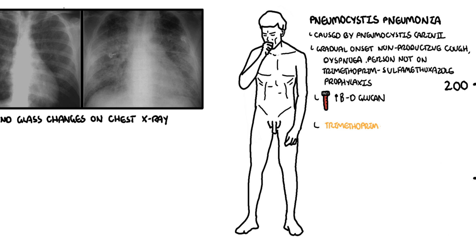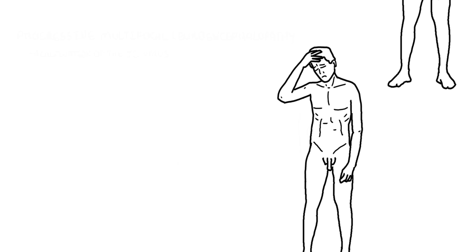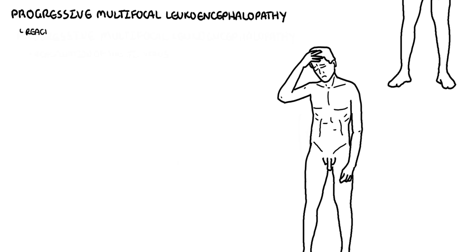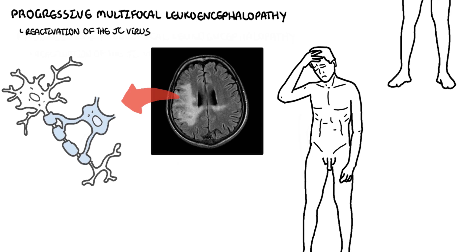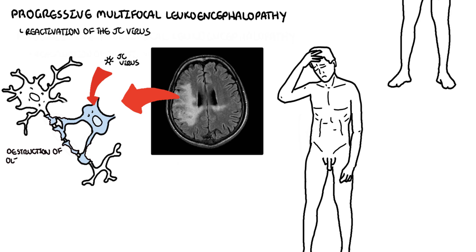Treatment of pneumocystis pneumonia is trimethoprim and sulfamethoxazole. Progressive multifocal leukoencephalopathy is a demyelinating condition of the central nervous system, caused by reactivation of the JC virus, which in normal people remains dormant. Reactivation of the JC virus targets the central nervous system, leading to aggressive replication within the brain tissue, specifically targeting oligodendrocytes — the cells important in myelination of neurons in the brain.